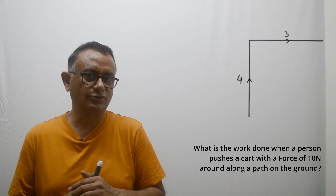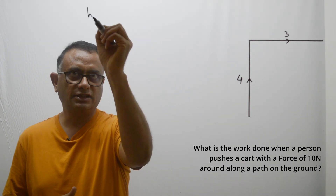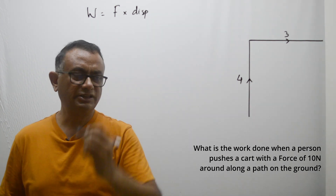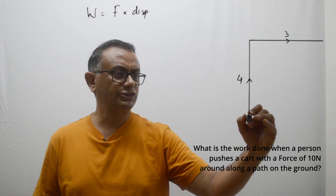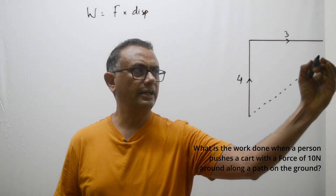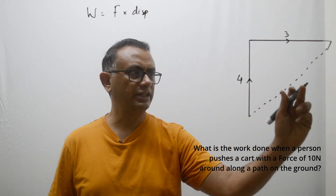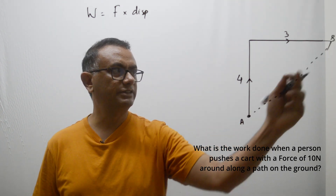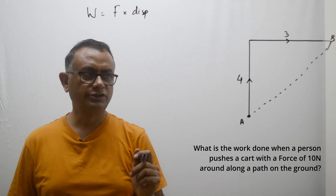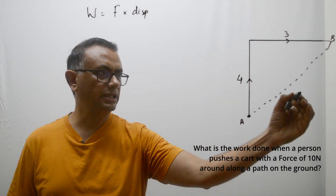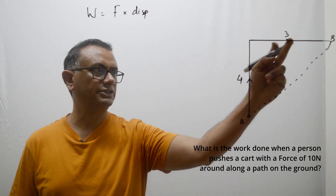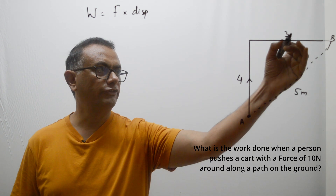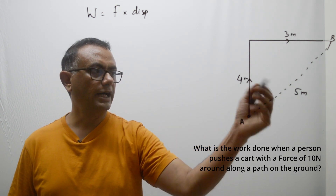The smart approach might be to say work done equals force into displacement, and calculate the displacement using the right-angle triangle. Since this forms a nice right-angle triangle, we might find the hypotenuse by calculating the square root of 16 plus 9, which is square root of 25, which is 5 meters.